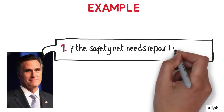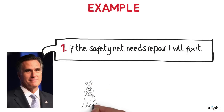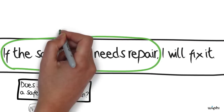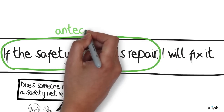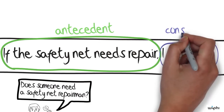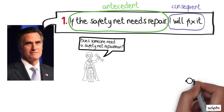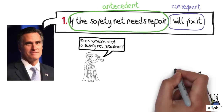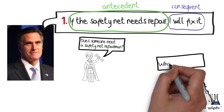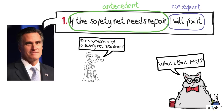Conditional sentences like this consist of two parts: an antecedent — 'the safety net needs repair' — and a consequent — 'I will fix it.'